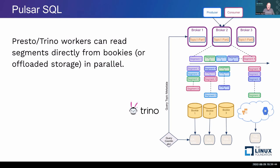If you want to get data out and don't want to write a client or use the command line, Presto/Trino is a very fast SQL tool with web UIs, GUIs, JDBC, ODBC, and Python connectors. It's a great way to query data stored in Pulsar, whether it's in those BookKeeper nodes or in tiered storage. Run full SQL really fast to see your data's current state — you run your query, it completes, there it is.